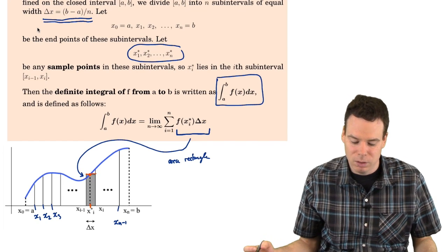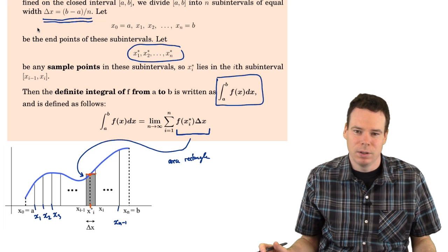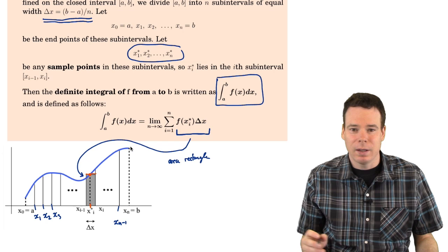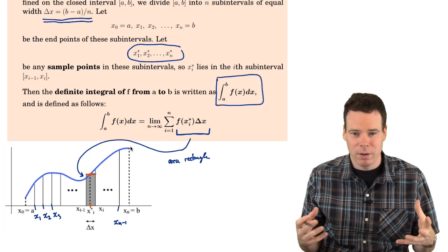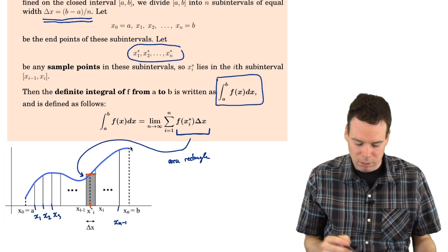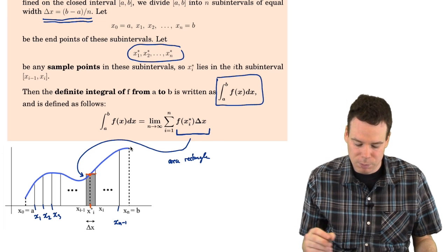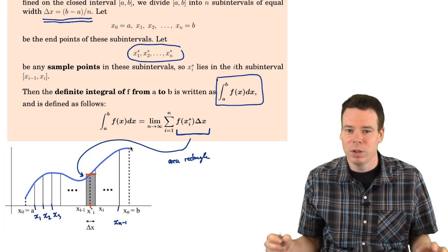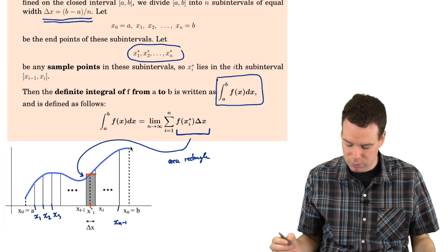One thing worth pointing out: at no point have we assumed f is a positive function. Our diagram seems to suggest we're thinking of f as positive, and we're talking about areas which are positive quantities, but at no point in this description have we assumed f is positive. So we could do the same thing with f being negative as well.